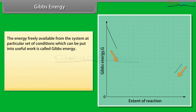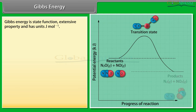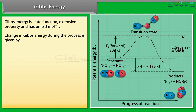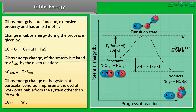Gibbs energy: the energy freely available from the system at a particular set of conditions which can be put into useful work is called Gibbs energy. Out of the total energy associated with a system, a part of it is random energy which is non-convertible into work. Gibbs energy is represented as G = H − TS. It is a state function, an extensive property, with units joule per mole. The change in Gibbs energy is ΔG = G₂ − G₁ = ΔH − TΔS. Gibbs energy change of the system is related to ΔS_total by: ΔG_system = −TΔS_total. Gibbs energy change represents the useful work obtainable from the system other than PV work.